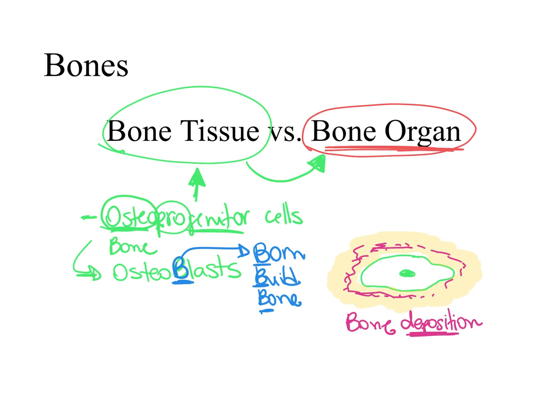The osteoblasts deposit these minerals in the extracellular matrix that they are producing, and they become trapped in it. When they are stuck, they mature into osteocytes. The word -cyte means cells, and osteocytes are the main cells in the bone tissue.